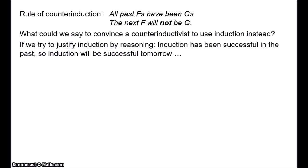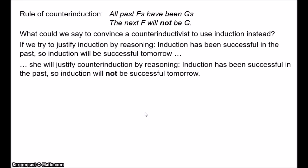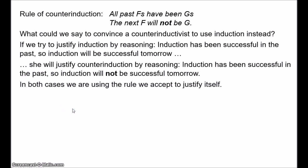It seems like a reasonable point, but the counter-inductivist objects. She says: you're just trying to justify induction by reasoning 'induction has been successful in the past, therefore it will be successful in the future.' That's just an application of the rule of induction. So why shouldn't I justify counter-induction by saying: induction has been successful in the past, therefore it will not be successful in the future — and therefore, rationally, you should be a counter-inductivist? The point is that the counter-inductivist's justification of counter-induction looks just as good; it's basically the same as our justification of induction. We're using the rule we already accept to try to justify that same rule.